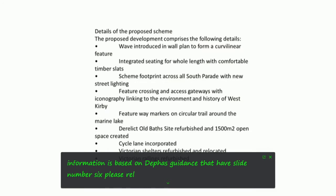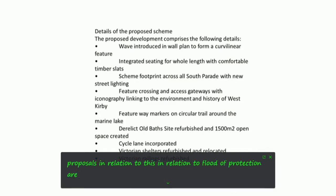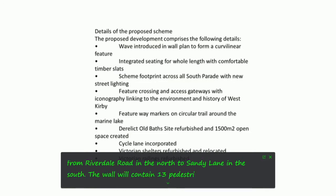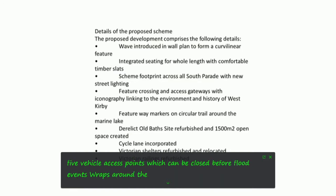In relation to the planning application, the key proposals for flood protection are: a 1.2 metre high flood wall covering 1.5 kilometres from Riversdale Road in the north to Sandy Lane in the south. The wall will contain 13 pedestrian access points and five vehicle access points, which can be closed before flood events. Wraps around the sailing centre will provide flood protection in line with planning conditions.